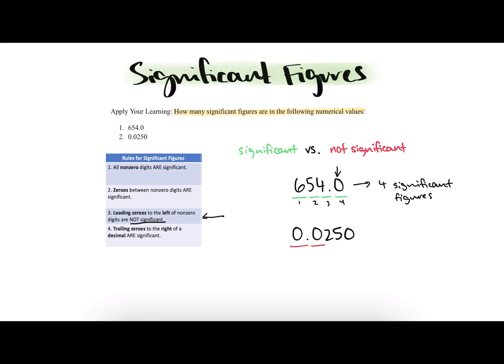Then we have our non-zero digits. And as we know from the first one, these are significant based on rule number one that says all non-zero digits are significant. Next, we have a trailing zero that comes to the right of the decimal. And so we would call this last zero significant as well.